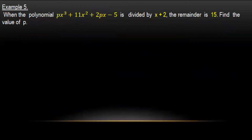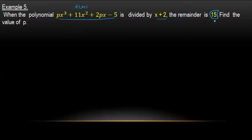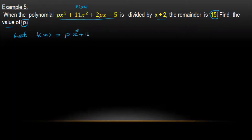Example 5. When the polynomial is divided by x plus 2, the remainder is 15. Find the values of b. Let f(x) equal to bx cubed plus 11x squared plus 2bx minus 1.